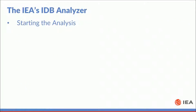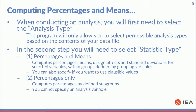Before we get started, take this opportunity to launch the IDB Analyzer. If you haven't downloaded a copy, please refer to the first tutorial of this series for instructions on how to download and install it. Also please start your copy of SPSS. When conducting any analysis with the IDB Analyzer, you will first need to select the analysis type. The program will only allow you to select permissible analysis types based on the contents of your data file. In the second step you will need to select the statistic type. For this tutorial we will be working with percentages and means, and percentages only.